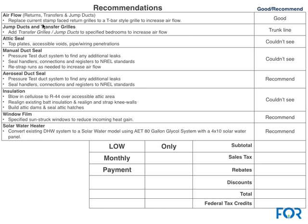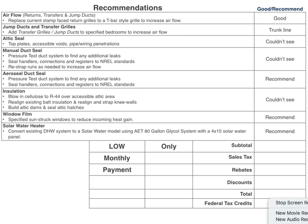To summarize this report: they've already got a bar style grill, can't do jump ducts because of the trunk line, attic seal is noted, duct seal will most likely be an Aeroseal which was recommended, insulation is inaccessible, window film was recommended, water heater was recommended — and that's all good. That's everything on this one.